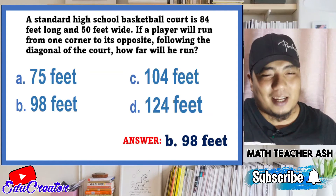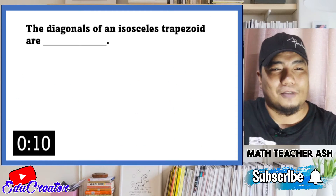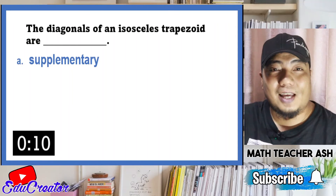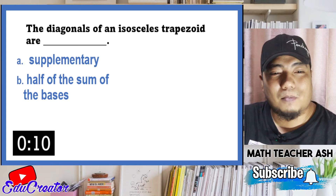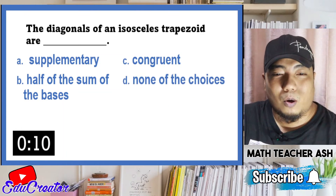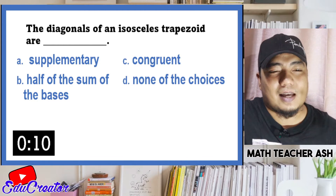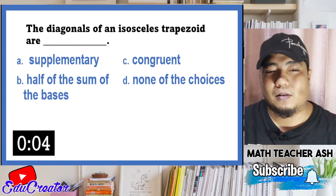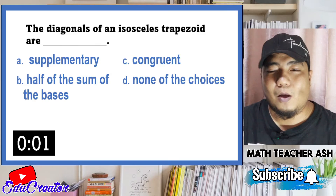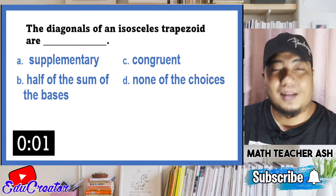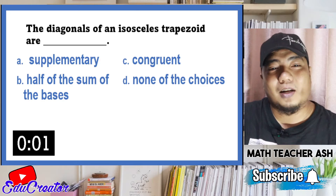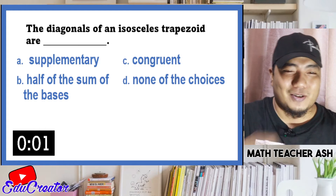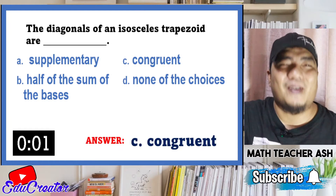Question number six: the diagonals of an isosceles trapezoid are — A) supplementary, B) half of the sum of the bases, C) congruent, or D) none of the choices? As mentioned earlier, in an isosceles trapezoid the diagonals are congruent. The correct answer is letter C.